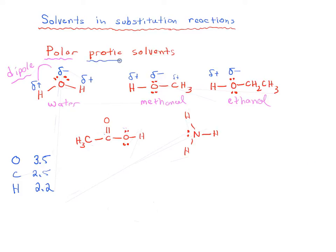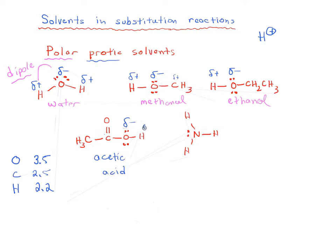The 'protic' in polar protic solvents comes from the proton, H+. In each of these molecules, we have a partial positive charge on our hydrogen. They're not full protons specifically, but they are protic in the sense that we have a partial positive charge on hydrogen. That's what makes these solvents polar protic.